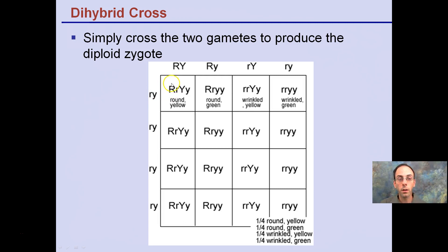You want to put like alleles together. So in this case our big R and our little r are put together. Our big Y and our little y are put together.